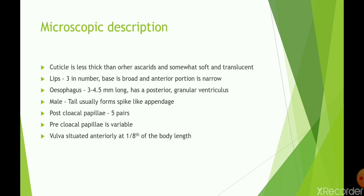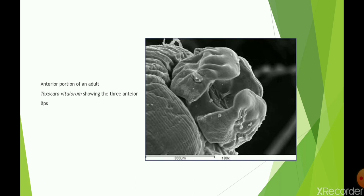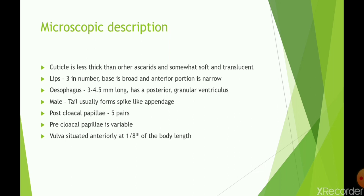Coming to microscopic description: it has a cuticle which is less thick than other ascarids and is somewhat soft and translucent. It has three lips, broad at the base and narrow at the anterior portion. The esophagus is 3 to 4.5 mm and has a posterior granular ventriculus. In males, the tail forms a spike-like appendage with five pairs of post-cloacal papillae, while pre-cloacal papillae are variable. The vulva is situated anteriorly, one-eighth of the body length from the anterior end.